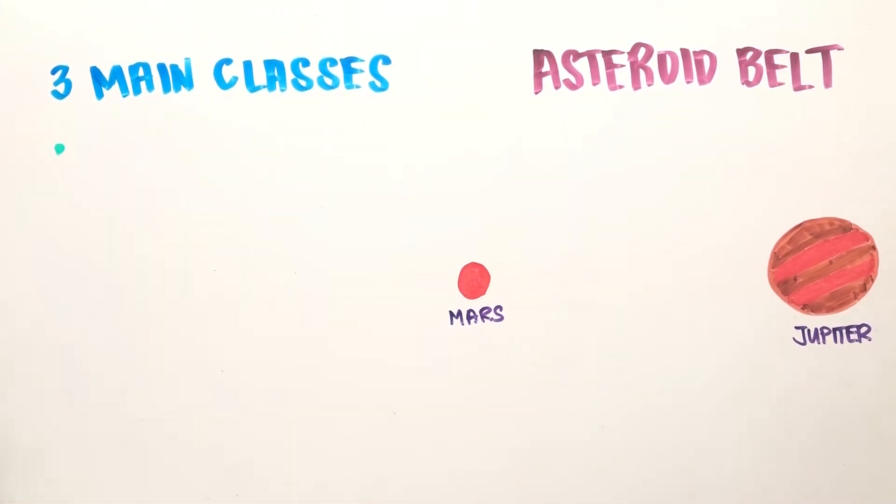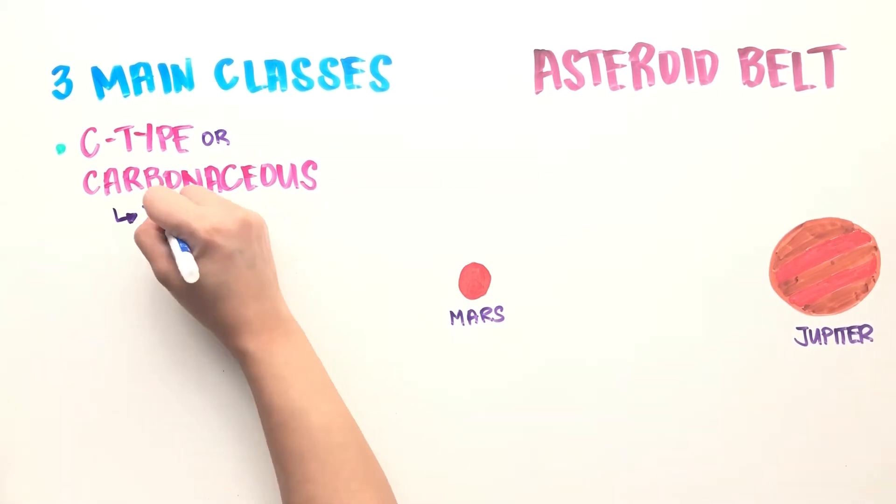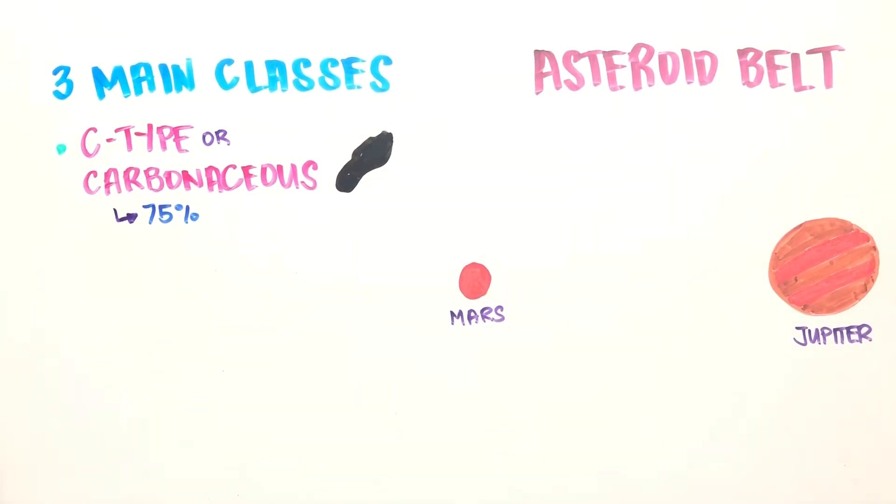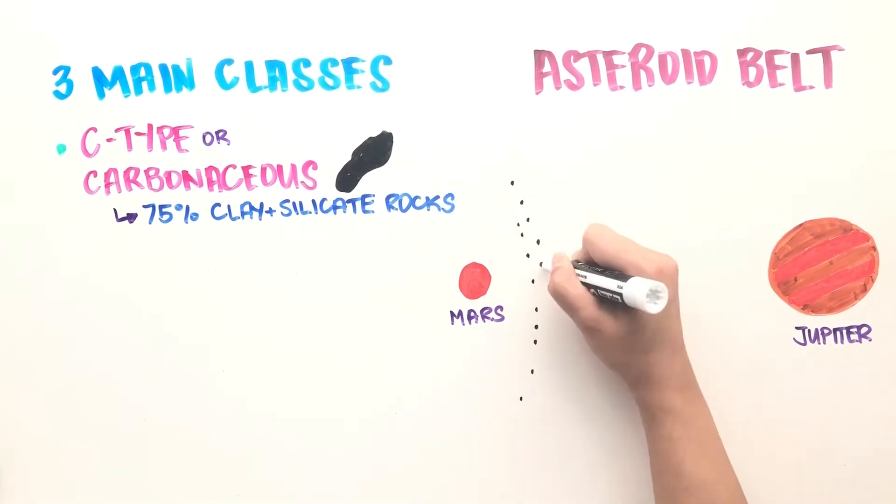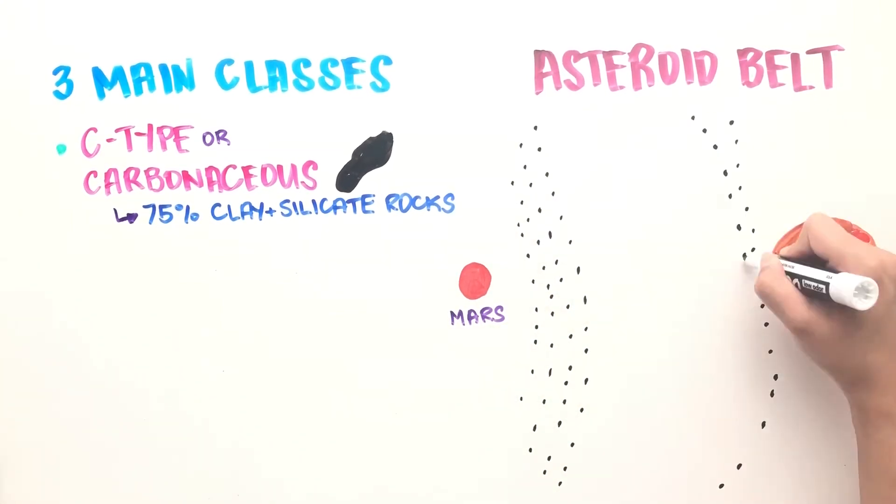There are three main classes of asteroids. C-type or carbonaceous asteroids are the most common and are grayish in color consisting of clay and stony silicate rocks. They can be found on the asteroid belt's outer regions.